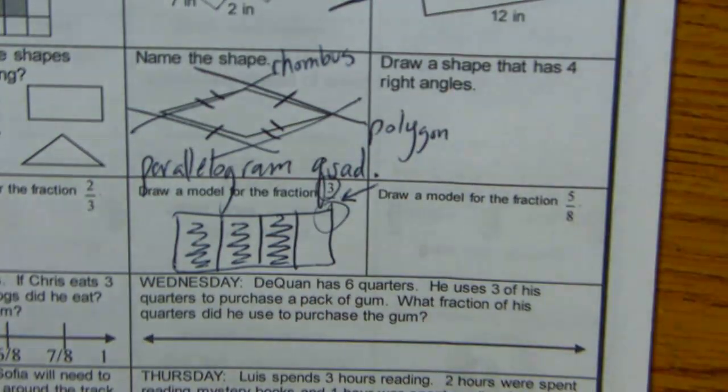All right, Wednesday. DeQuan has 6 quarters. He uses 3 of his quarters to purchase a pack of gum. What fraction of his quarters did he use to purchase the gum? It doesn't say that we have to use that number line.